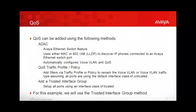By default, all ports on an Avaya data switch are set for untrusted. This will simply remark all traffic to best effort. For voice over IP, it is critical to enable QoS throughout the network. This means QoS must be provisioned end-to-end on all switches and routers where the voice traffic may travel. The VLAN data switch can be provisioned using several methods: auto-detect/auto-configure, also known as ADAC; provisioning QoS traffic profiles or policy; or adding a trusted interface group and applying it to all ports. For this example, we will use the trusted interface group method.